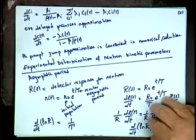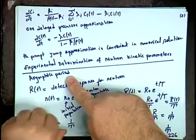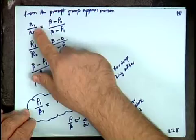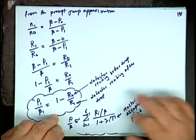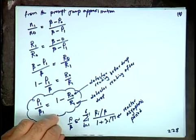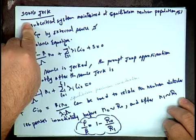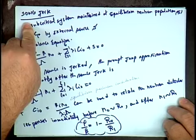In these methods, N is the neutron population measured using a detector, so N is proportional to detector response R. Knowing the detector response allows calculation of the reactor kinetic parameters. Two methods were discussed: the rod drop method and the source jerk method.